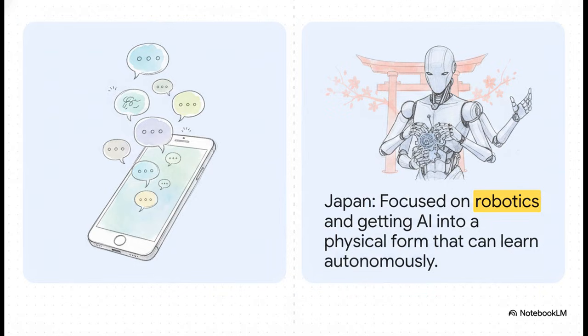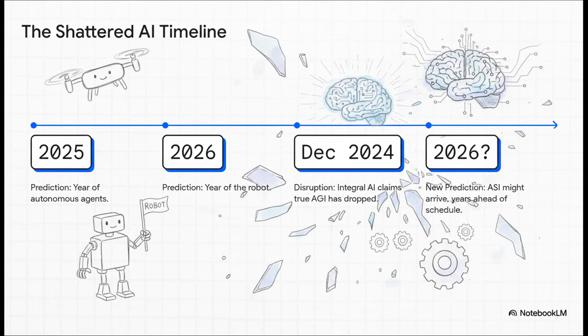Well, while Silicon Valley was kind of locked in this arms race to build a better chatbot, focusing on language and digital prompts, Japan was playing a different game. With their deep history in robotics, they were focused on a harder problem, giving AI a body and teaching it to learn on its own in the physical world. And just look at what this does to all the predictions.